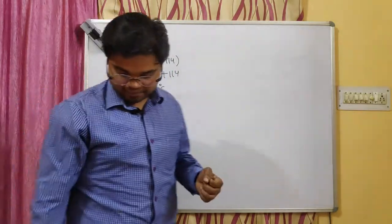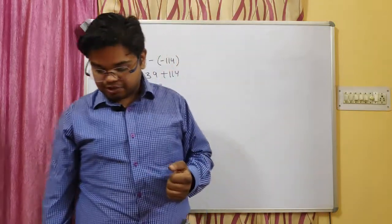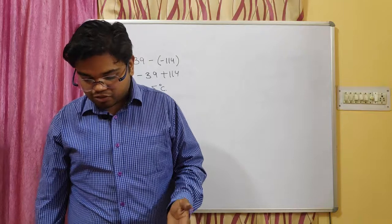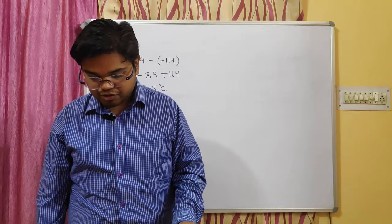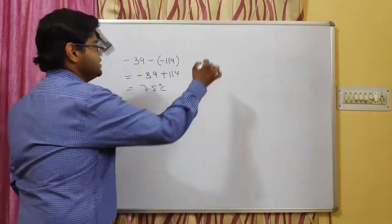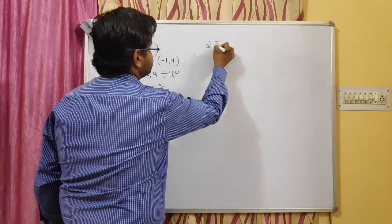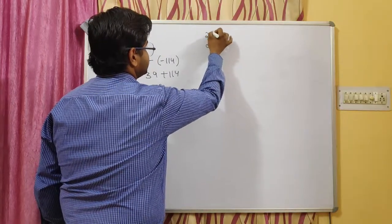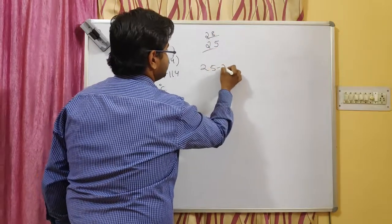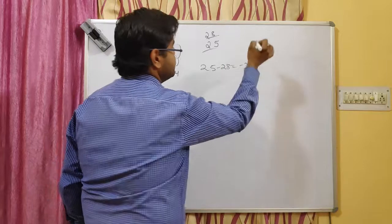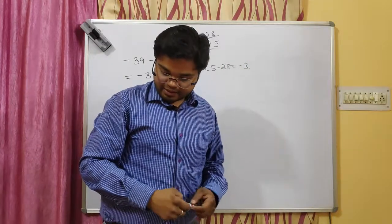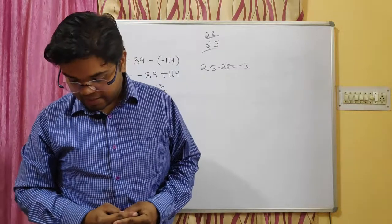Question 9: In a card game it is possible to have a negative score. If Aisha's score is 25 and she loses 28 points, what will her score be? Her score is 25 and she loses 28 points, so 25 minus 28 equals minus 3. Negative points are possible in a card game.